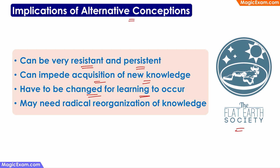If the person gets rid of the alternative conception and starts believing in the scientific explanation, a radical reorganization of knowledge is required in the person's brain, because they have been believing in this alternative conception — that the earth is flat — for a very long time. A complete radical reorganization of that belief and knowledge is required before the person can start accepting new knowledge.